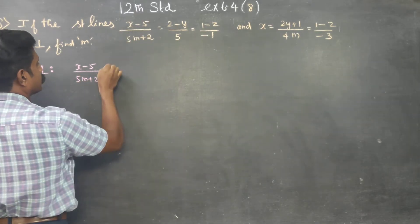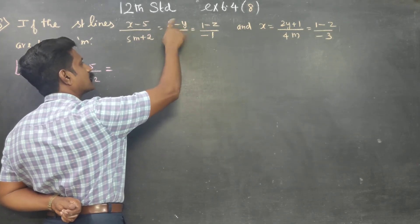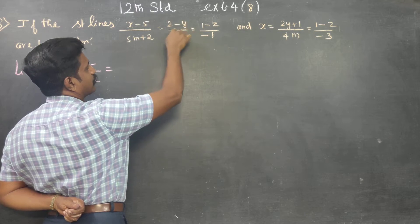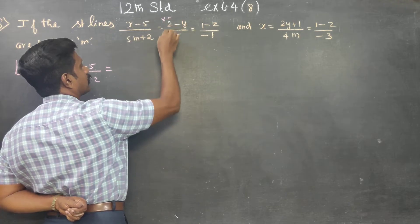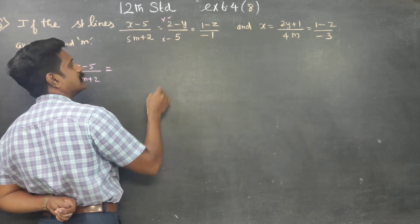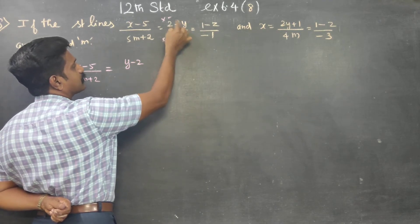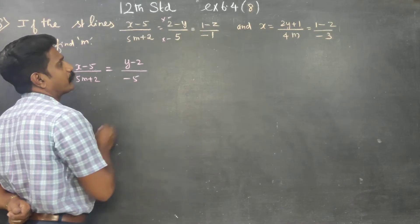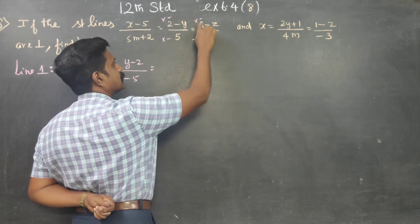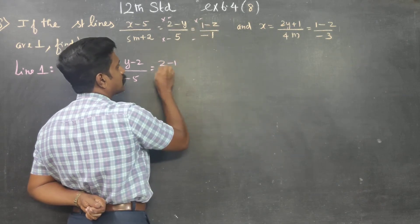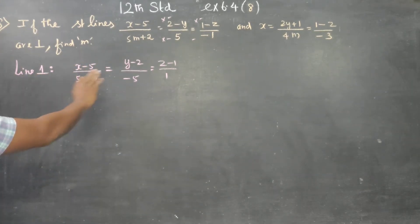This is in standard form. But the y-term is not in standard form — it has minus y, which is not standard. Multiply numerator and denominator by minus. What you will get is y minus 2; this is the standard form. Then z minus 1, this is minus 1, plus 1 — this is the standard form.